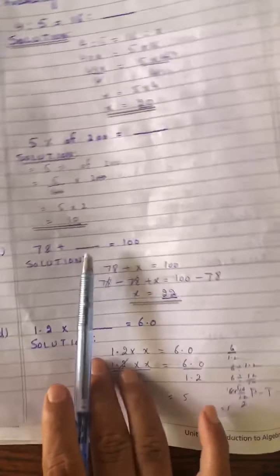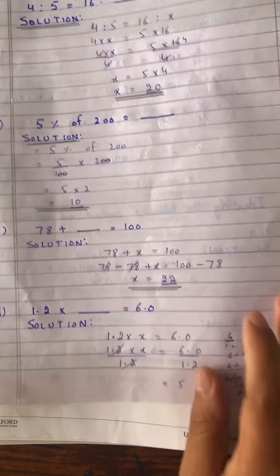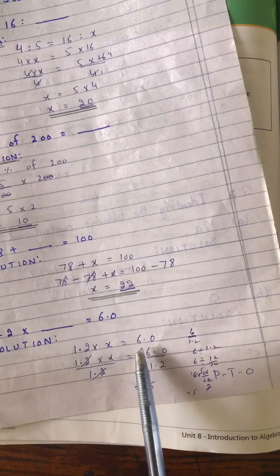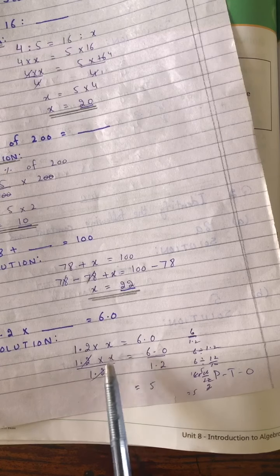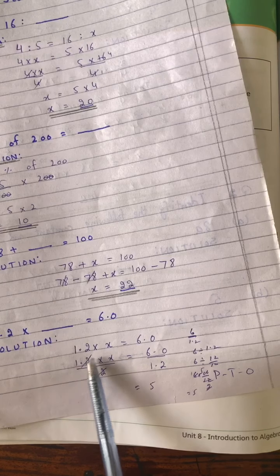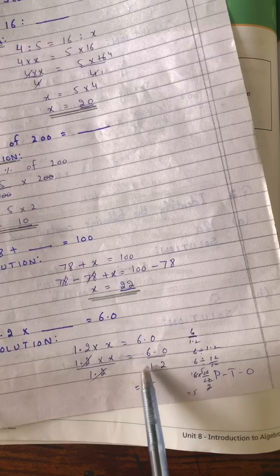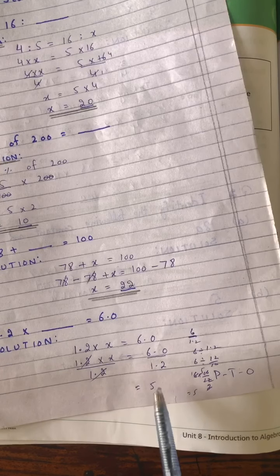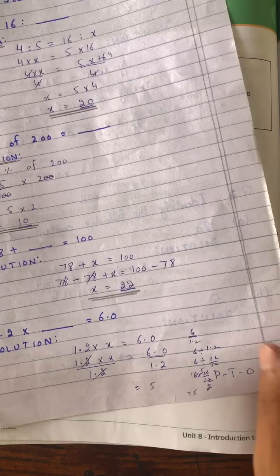Part D: 1.2 multiplied by X is equal to 6.0. Solution: 1.2 × X = 6.0. To isolate X, divide both sides by 1.2. X = 6.0 ÷ 1.2 = 5.